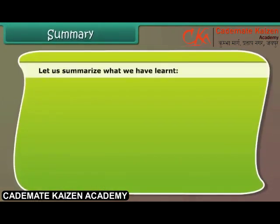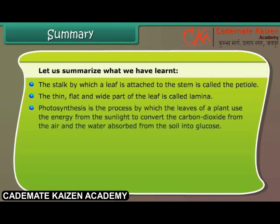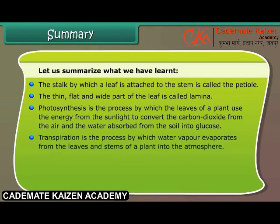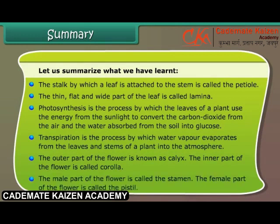Let us summarize what we have learned. The stalk by which a leaf is attached to the stem is called the petiole. The thin, flat part of the leaf is called lamina. Photosynthesis is the process by which the leaves of a plant use energy from sunlight to convert carbon dioxide from the air and water absorbed from the soil into glucose. Transpiration is the process by which water vapor evaporates from the leaves and stems into the atmosphere. The outer part of the flower is known as calyx. The inner part is called corolla. The male part of the flower is called the stamen, and the female part is called the pistil.